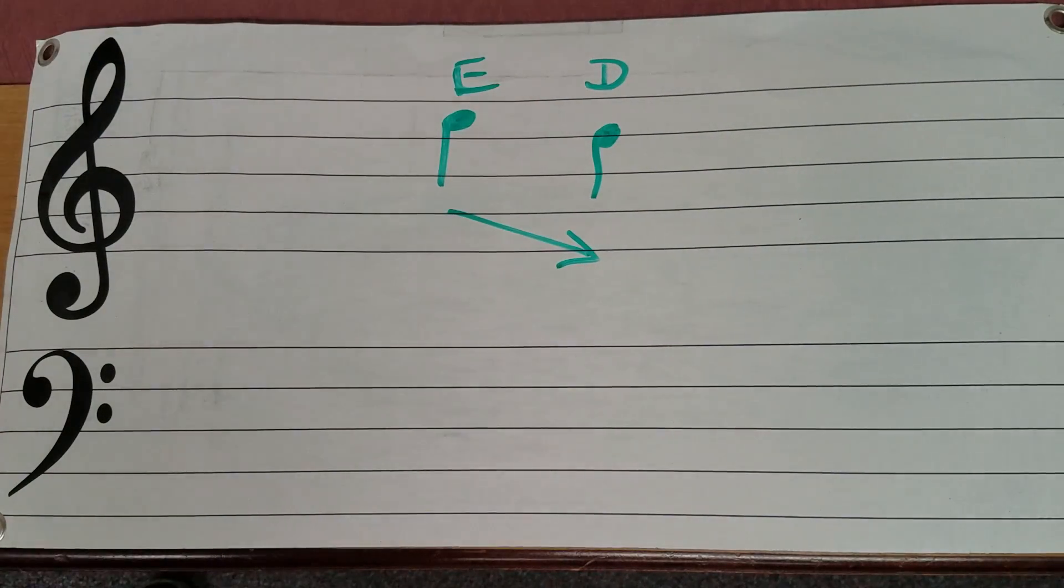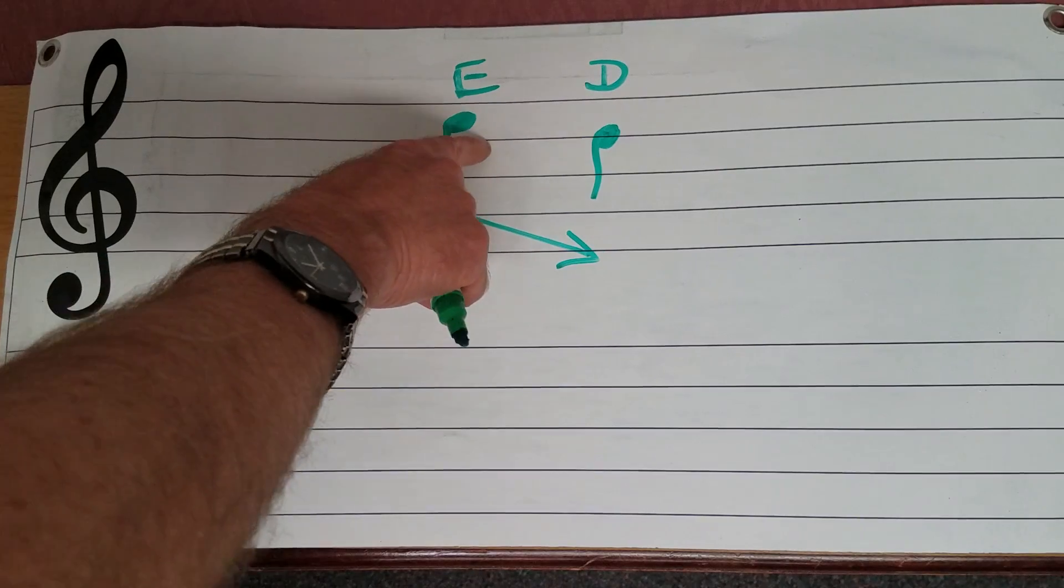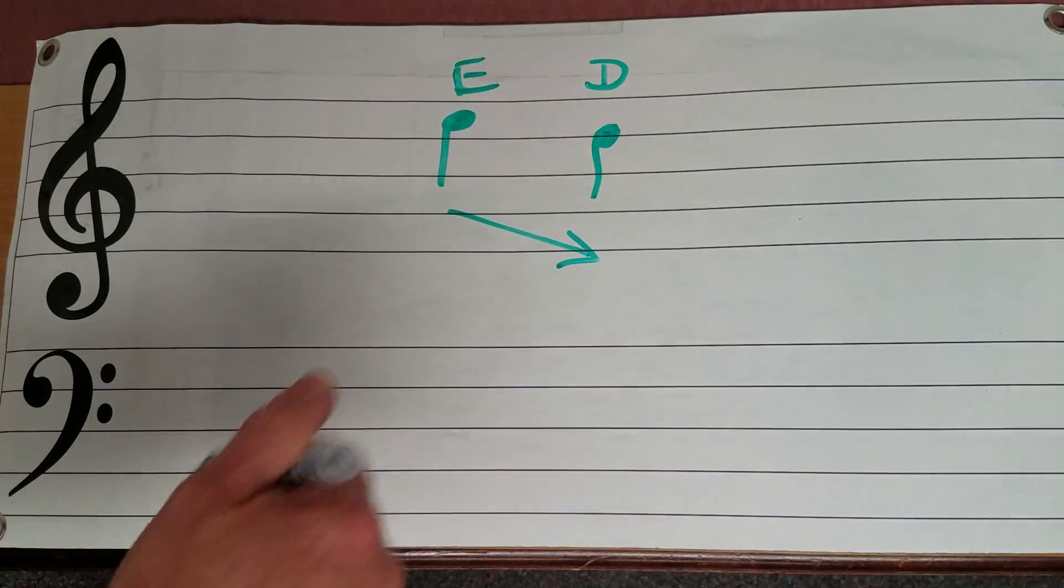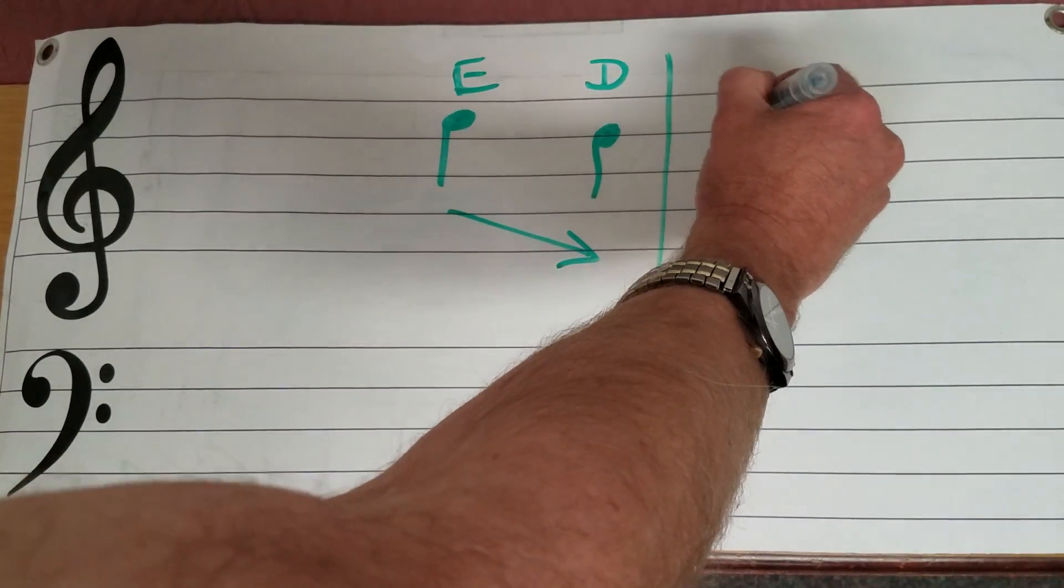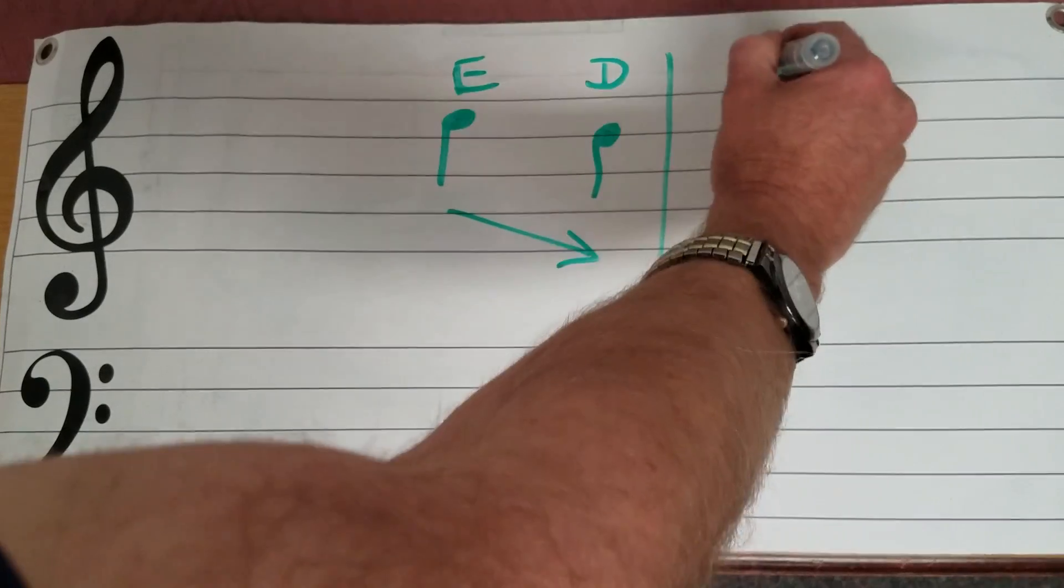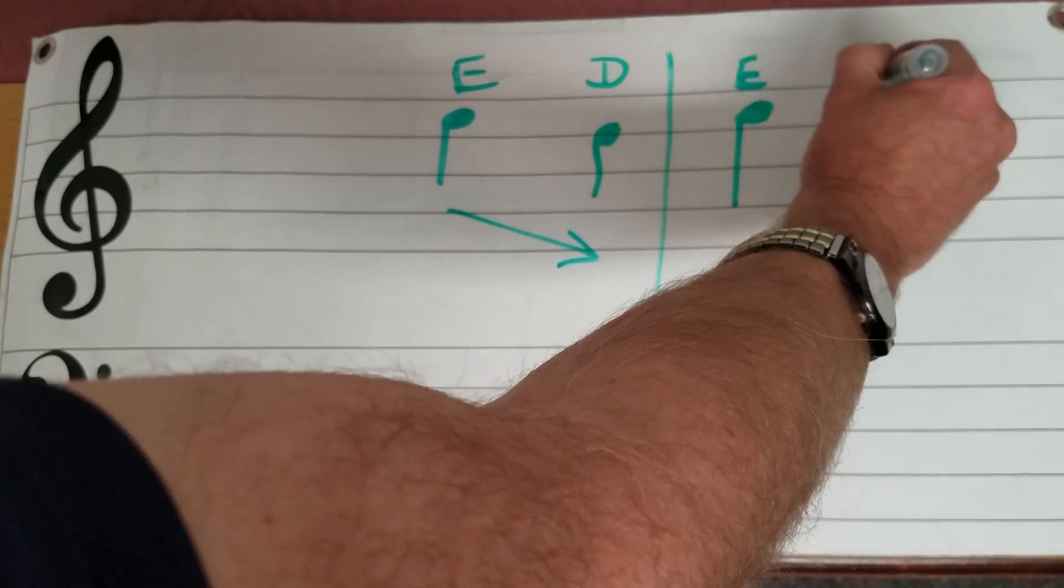So just like in our alphabet, A, B, C, D, E, if you go backwards, E to D. All right, let's draw a little measure line here and let's do this note now. We have once again E. Now we're going to go the other direction.